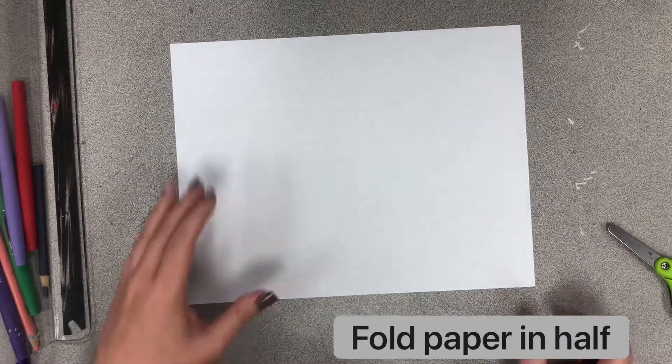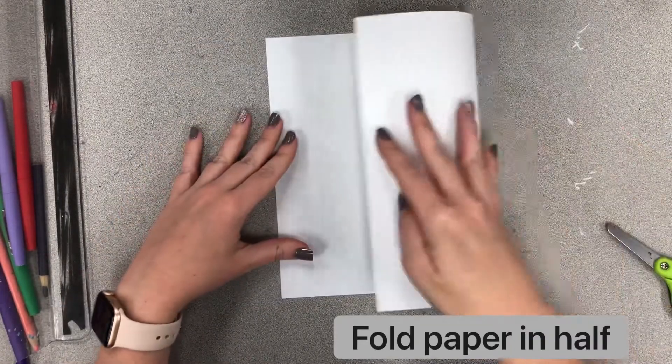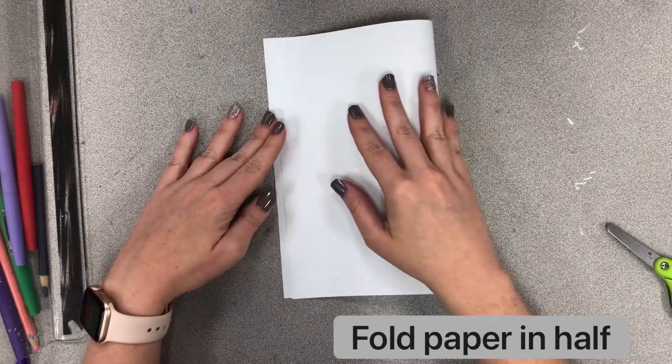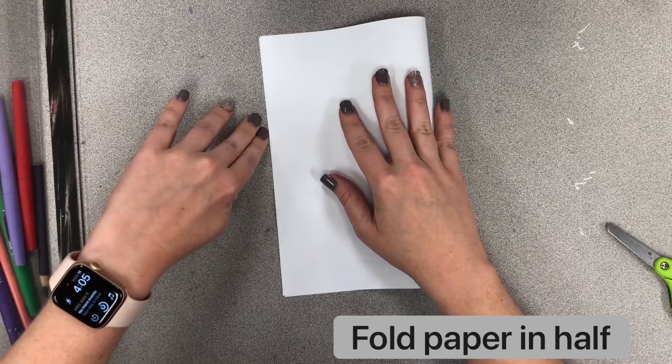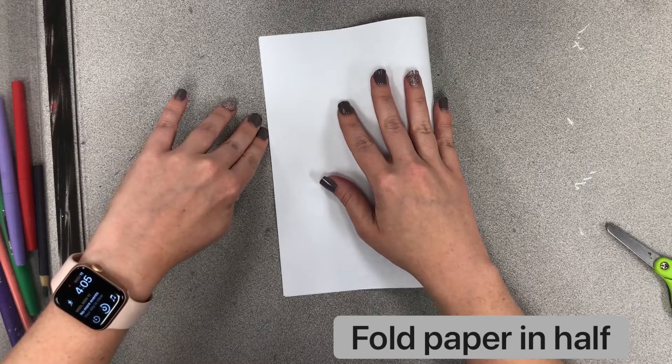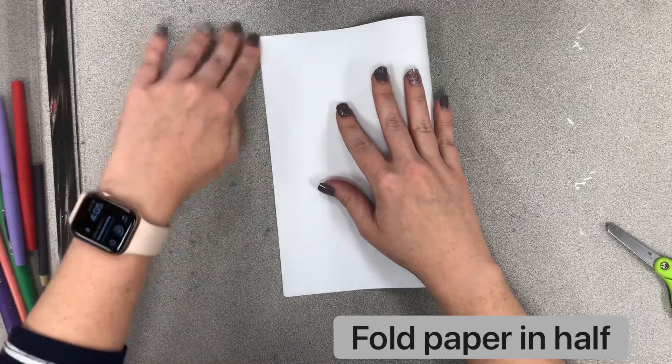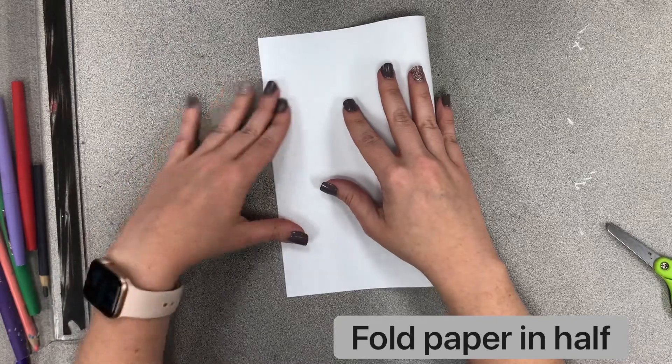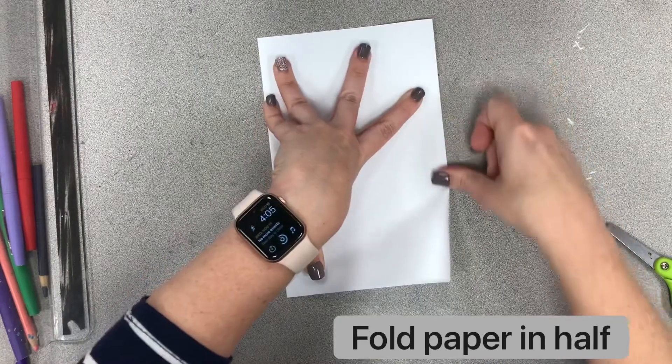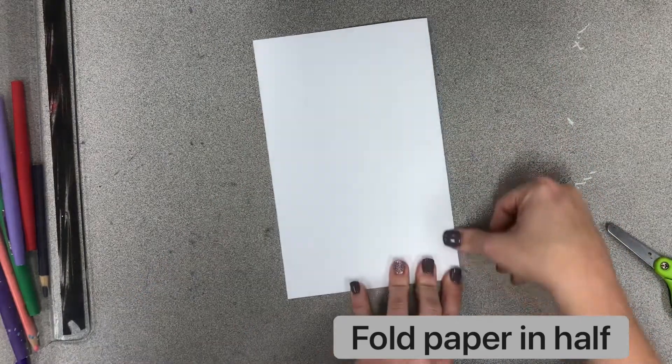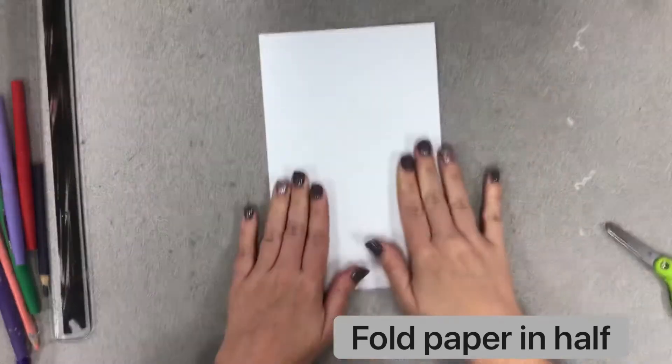Okay, so to fold our gratitude journals, we're going to start with a plain sheet of paper. I'm just using computer paper here, and we're going to fold it in half. When I fold the paper in half, I want to make sure that my corners line up before I crease. You're going to crease your paper by rubbing your finger along the side so that you get a nice firm crease.